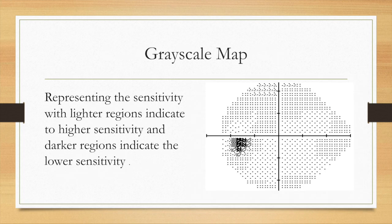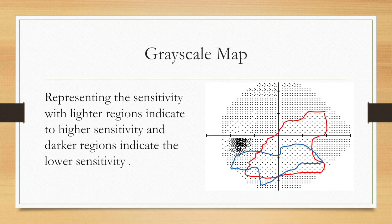Now the grayscale map represents sensitivity with lighter regions indicating higher sensitivity, as inside this red area. The darker regions indicate lower sensitivity, as in this blue area and green area.